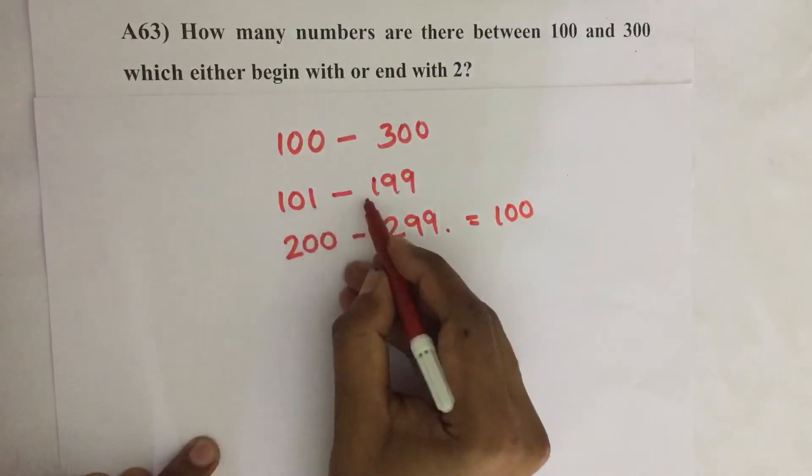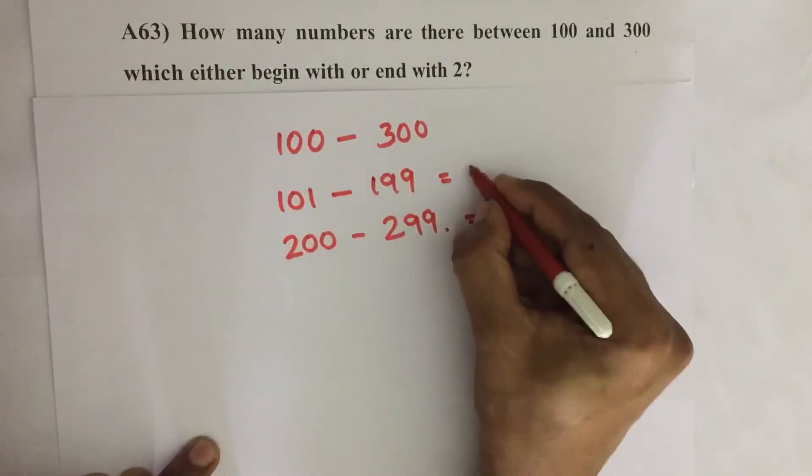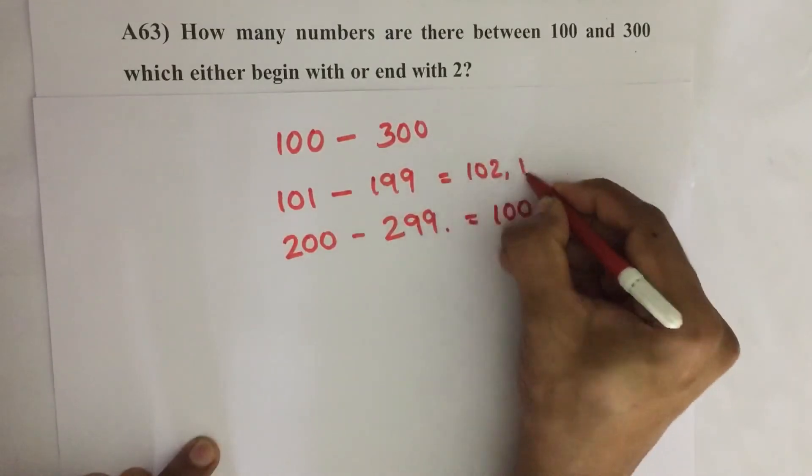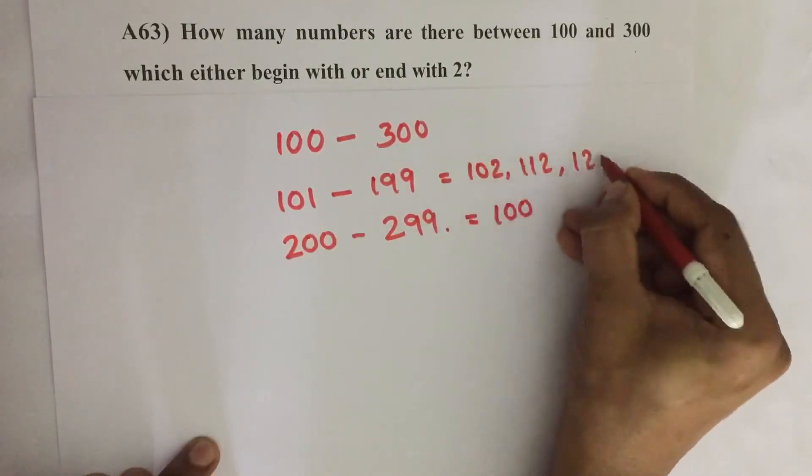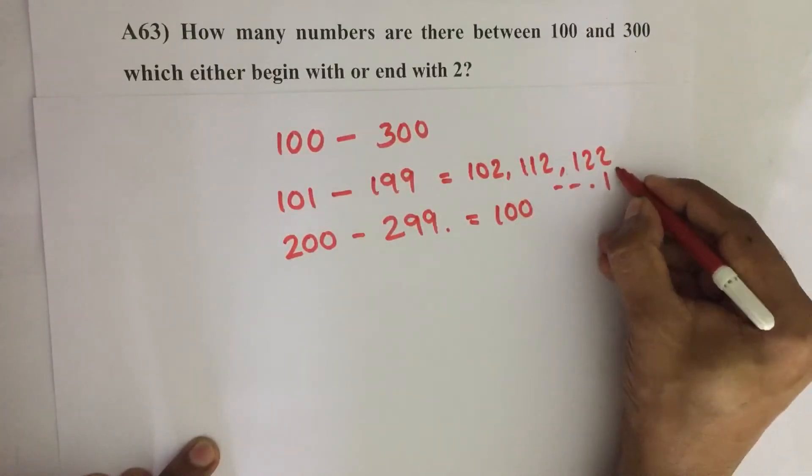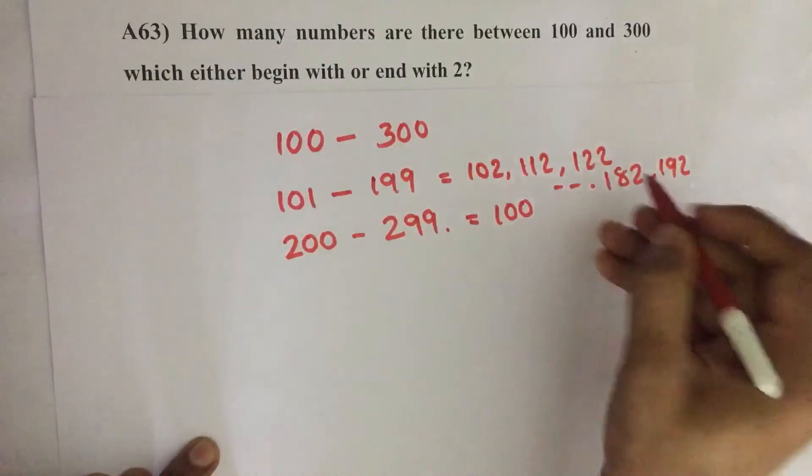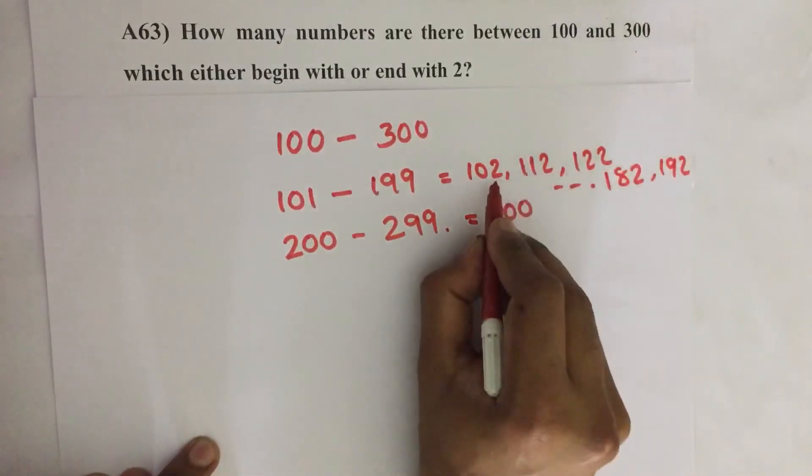Then 101 to 199: 102, 112, 122 like that, 182, 192. Ten such numbers are there which end with 2.